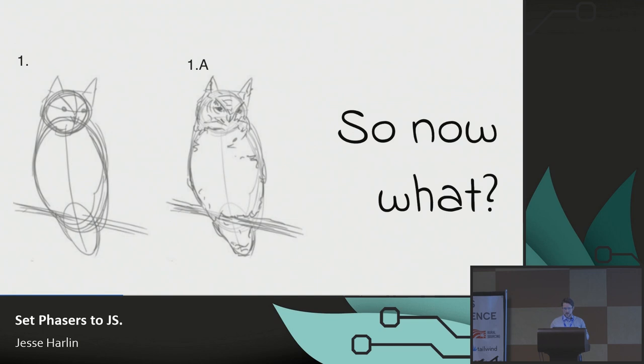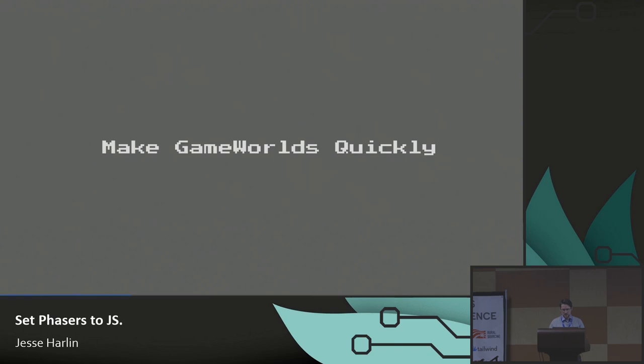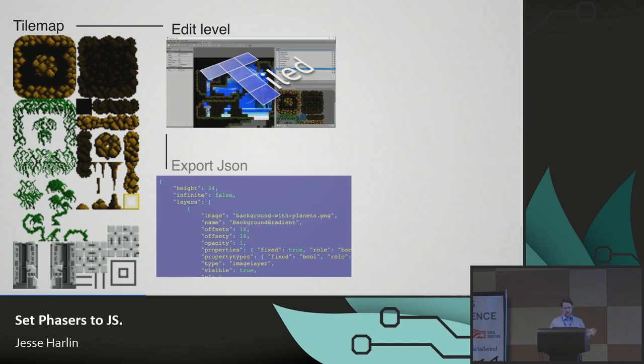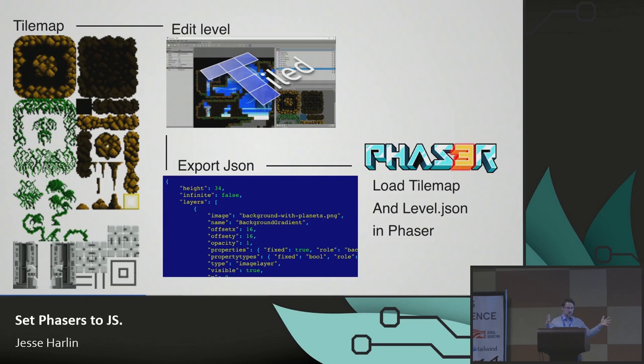If you really do want to make a game, you're going to want to make game worlds quickly. The first thing I'm going to say right off the bat: go get you some Tiled. It's tilemap.org — you can literally Google search Tiled and it's the first thing that pops up. This is a screenshot from a game I'm working on. You load a tilemap, go edit a level, export some JSON, stick it in Phaser — there's your level.